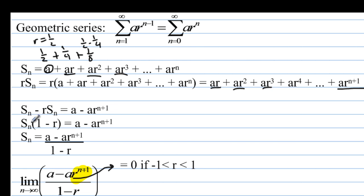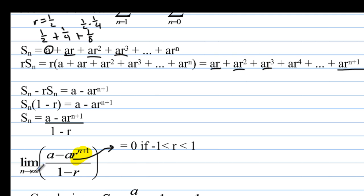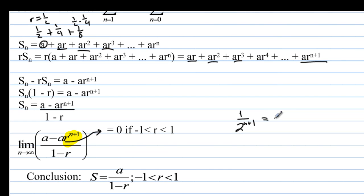Taking the limit as n approaches infinity: if r is between negative 1 and 1 — in other words, a fraction — then ar^(n+1) goes to 0. So the series converges, and the value it converges to is a sub 1 over (1 minus r).